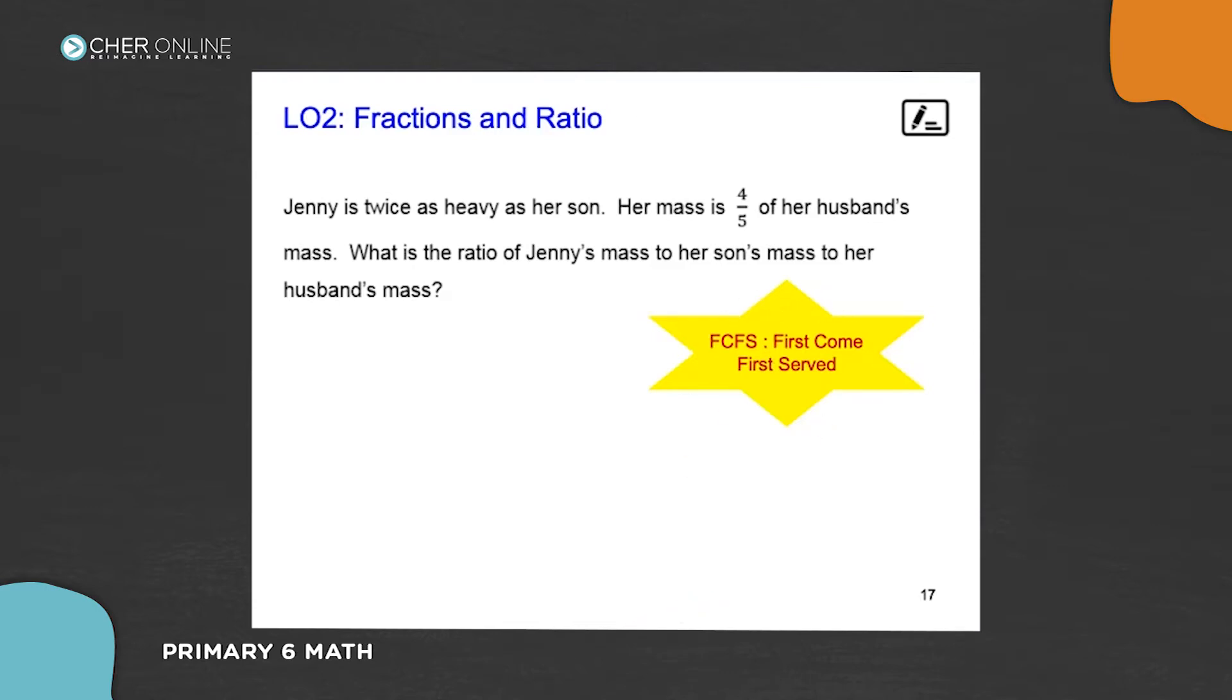What does first come, first serve mean? It means that numerator goes to the first person. That is the number of units that the first person has. So in this case, four means that Jenny has four units in her mass. Then, denominator goes to the second person in the sentence. So her husband has five units in terms of the mass.